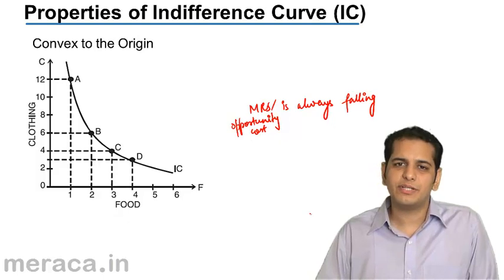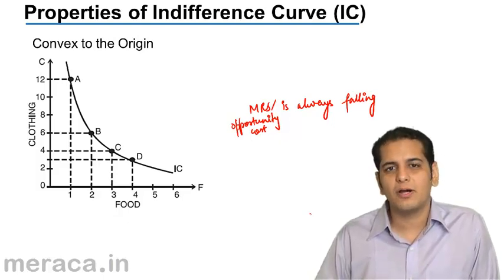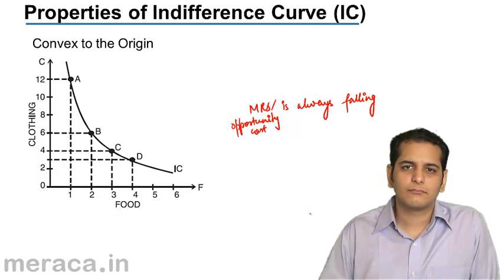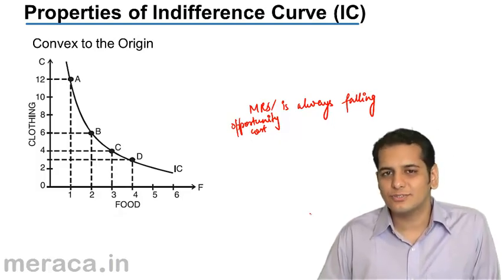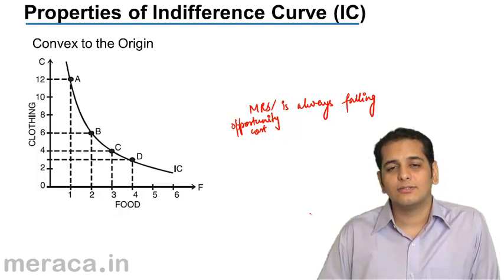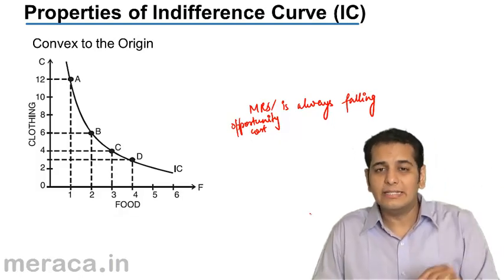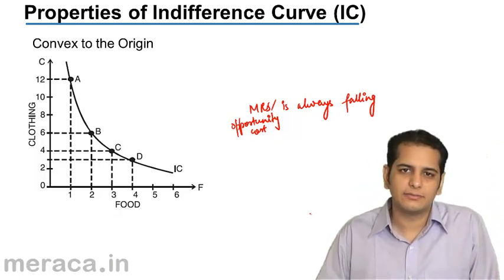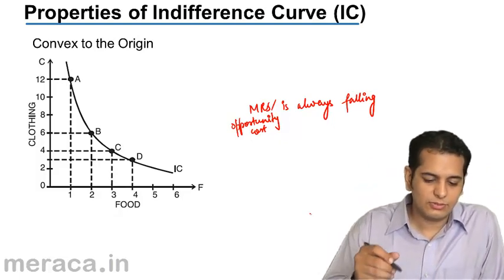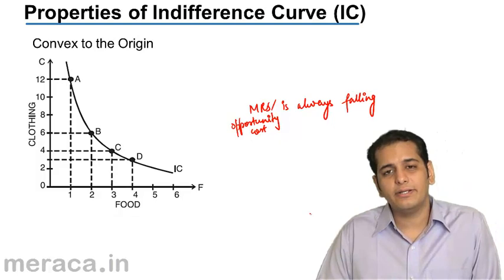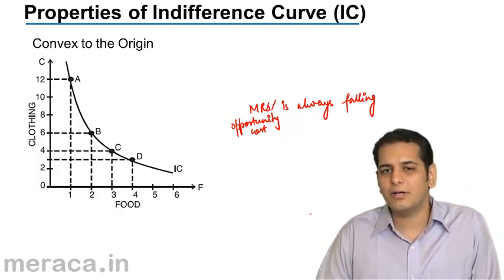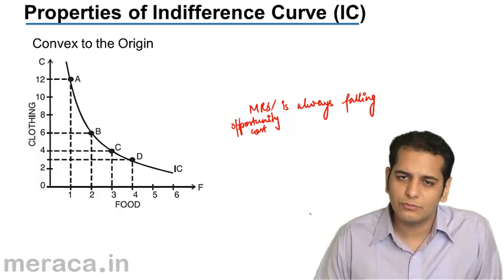What would be the shape of a curve if the MRS is constant? When the MRS is constant, the curve will be linear — it will be in the form of a straight line. Thus, the shape of the indifference curve is convex to the origin because the MRS is always falling.